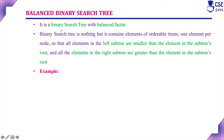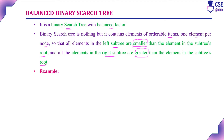The balanced binary search tree is a binary search tree with balance factor. What do we mean by binary search tree? Binary search tree consists of elements of orderable items, that is one element per node. All the elements in the left subtree are smaller than the element in the root, and all the elements in the right subtree are greater than the element. That is the main constraint.